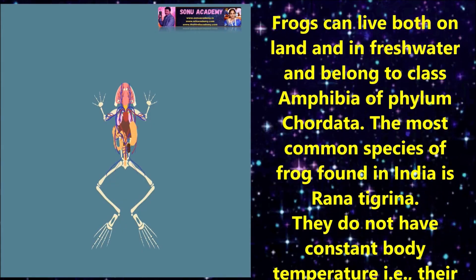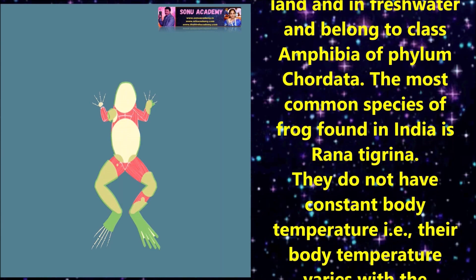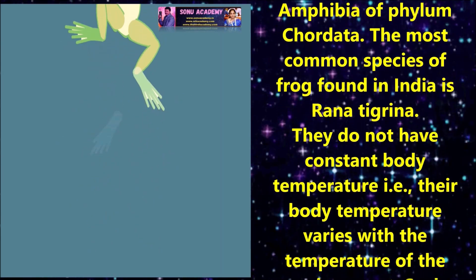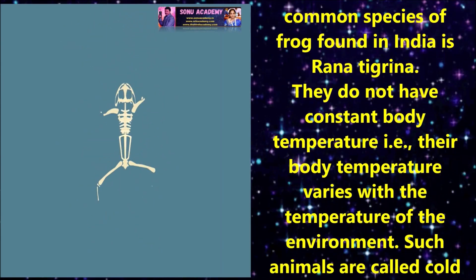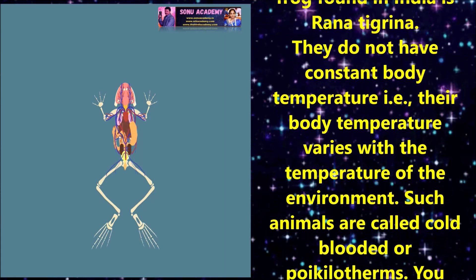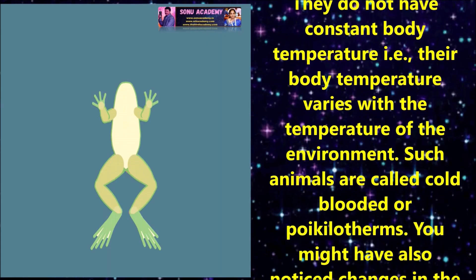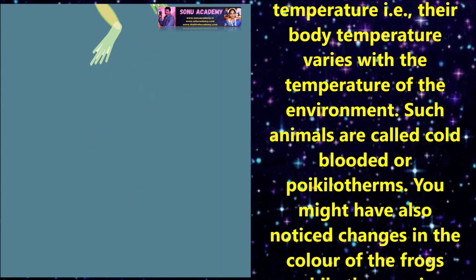The most common species of frog found in India is Rana tigrina. They do not have a constant body temperature; their body temperature varies with the temperature of the environment.